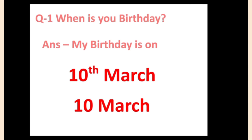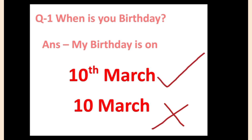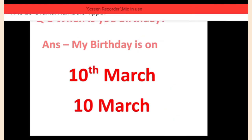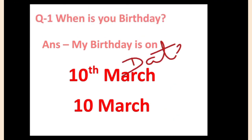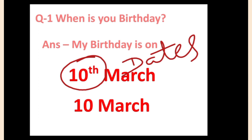Let us have one more example. If I ask you when is your birthday, you would answer 'my birthday is on...' I have given two options: either you say 'tenth March' or 'tenth March.' Let me tell you — 'the tenth March' is wrong and 'tenth March' is correct. Because when we tell the date, we always use ordinal numbers. So when is your mother's birthday? You will say: my mother's birthday is on 20th March or 3rd April. Always tell your date only in ordinal numbers.